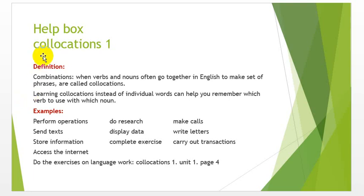Here we have the help box — the grammar section. We will study collocations. The definition of collocation is that when verbs and nouns often go together in English to make a set phrase, we call it a collocation. Learning collocations instead of individual words can help you remember which verb to use with which noun. If you just memorize the individual word, that is not very useful. But if you memorize the word together with the word before and after it, then you can use it in different contexts.